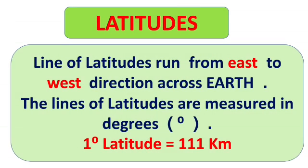It is easier to locate places on the globe because of the horizontal and vertical lines drawn on it. Horizontal lines are latitudes and vertical lines are longitudes. Let us have a look at them one by one.